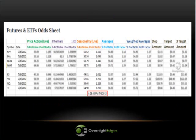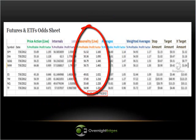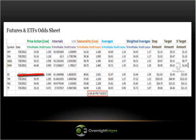Here's a shot at the overnight edge's odds sheet as run on July 6, 2012. It's a little scrunched up so it could fit on this PowerPoint slide. I've also blurred out most of the numbers so that I can more easily draw your attention to the seasonality odds, which are the ones I'll be talking about today. Specifically, I'll be talking about ES, which is my preferred vehicle, along with SPY.